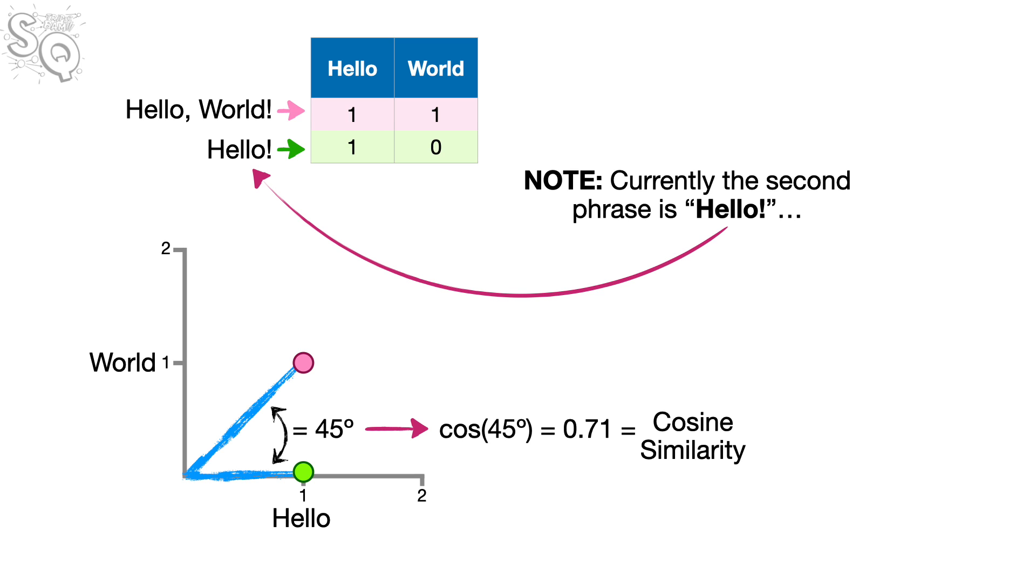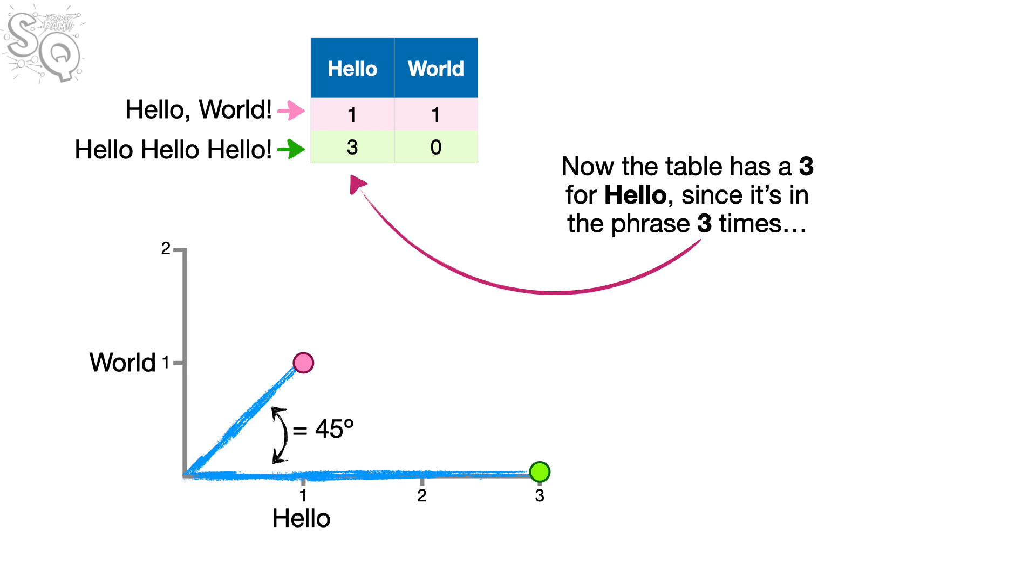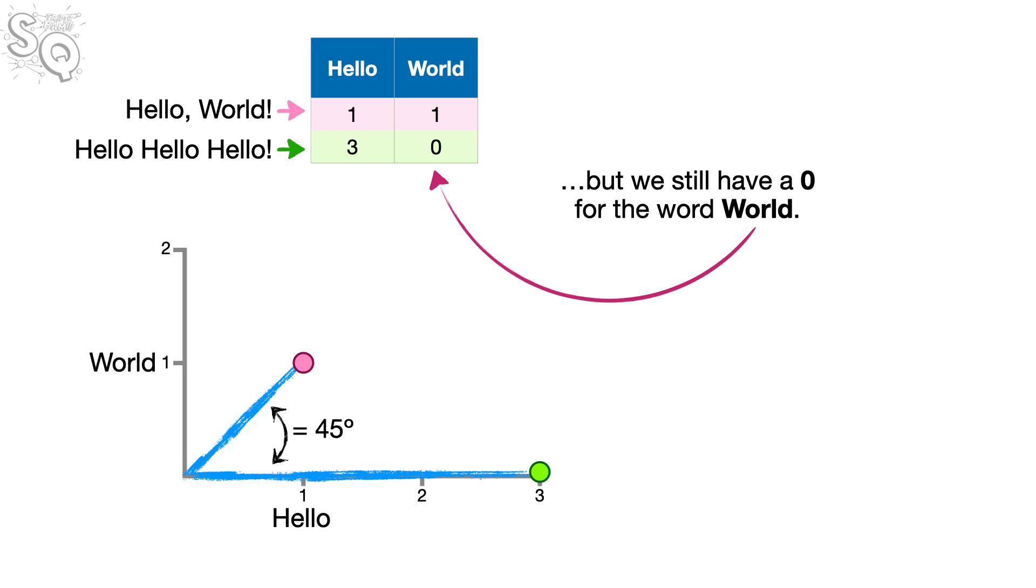Note, currently the second phrase is Hello! But what if it were Hello, hello, hello! Now the table has a 3 for Hello, since it's in the phrase three times. But we still have a 0 for the word world.